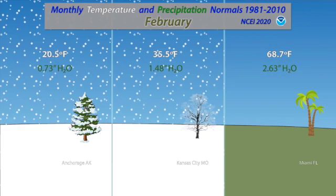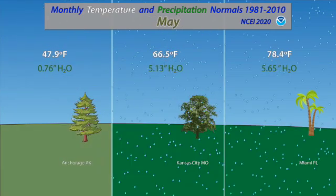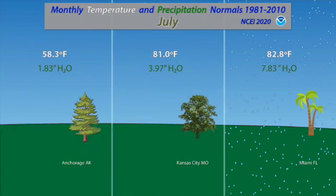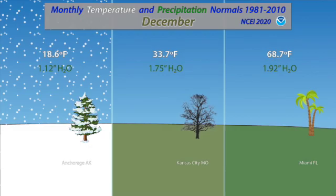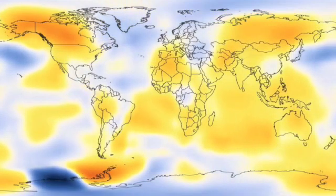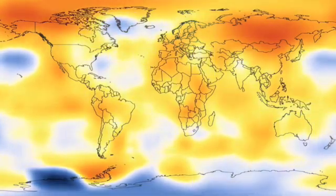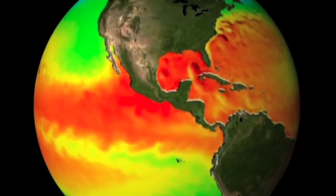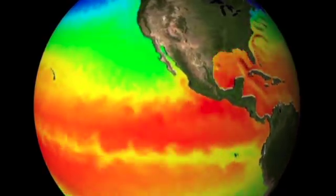Another way to think about the difference between weather and climate is by comparing locations on Earth. The weather consists of the atmospheric conditions at any given time in a specific place, but we'd expect it in general to be warmer in Miami than in Anchorage, because Florida has a warmer climate than Alaska. Students learned about these in the previous unit.